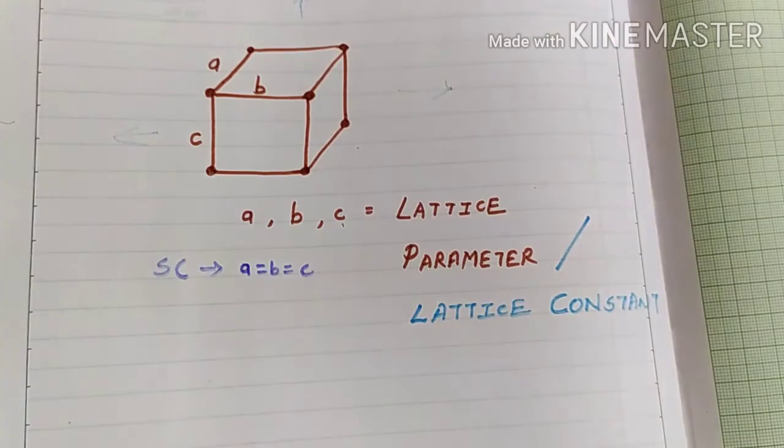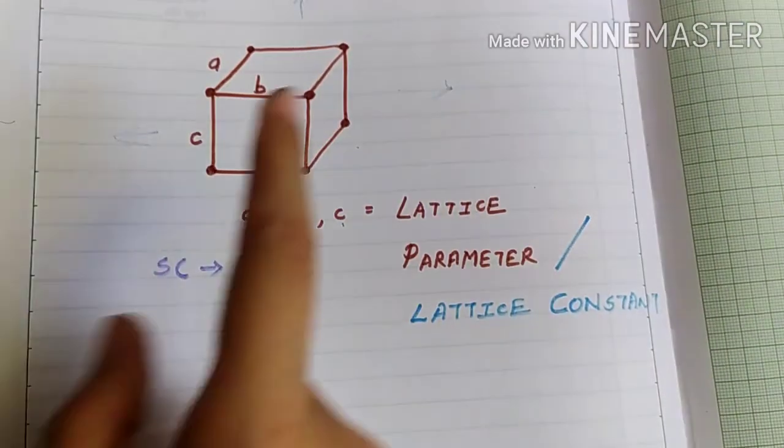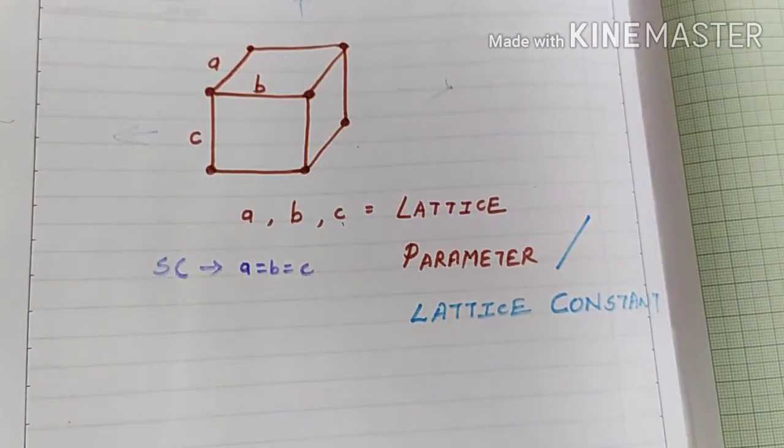Consider this is a unit cell. It is the most basic form of a crystal. So this unit cell, this exact structure, if we repeat the structure continuously in three directions, that is x, y and z, that would lead to the formation of a crystal.